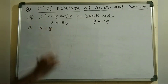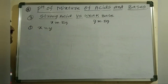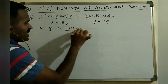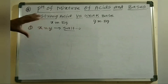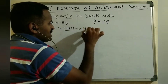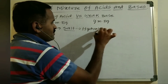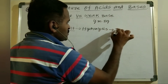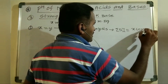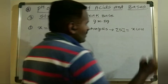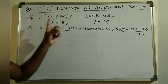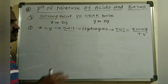Case 1: X equals Y — milliequivalents of strong acid equals milliequivalents of weak base. It forms a salt, which will definitely undergo hydrolysis because it is a salt formed from a strong acid and weak base. The salt concentration equals X (milliequivalents of strong acid) divided by the total volume, which is the sum of the volumes of strong acid and weak base.